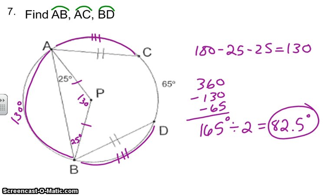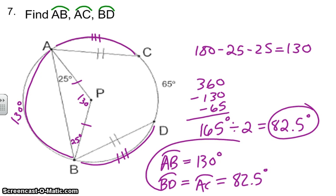So that is going to be part of our answer. So let's look back at what we have to find. AB, we already put in our picture, 130 degrees. The other two are congruent arcs. So BD and AC are going to equal the same thing, which is 82.5. And this is the conclusion of Section 10.3. Thank you.